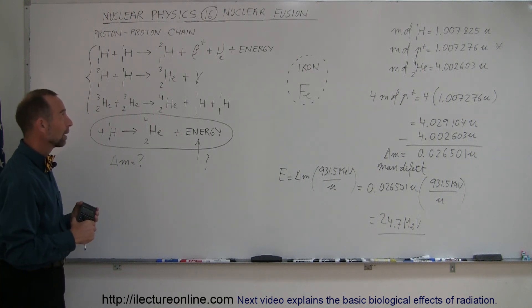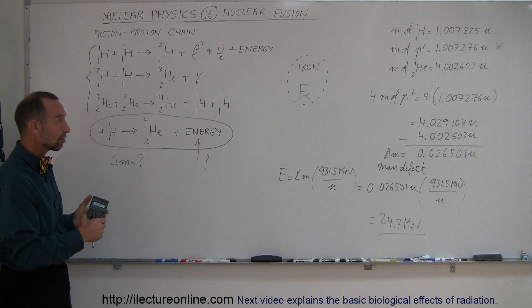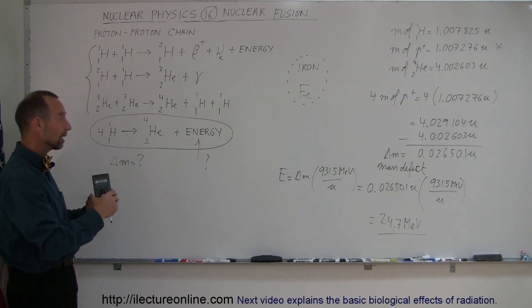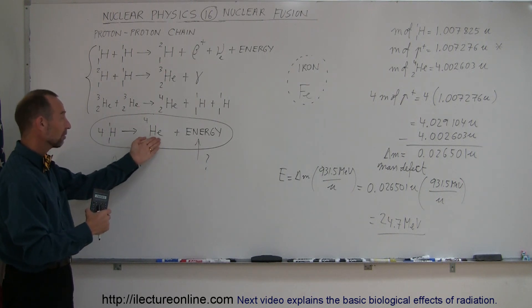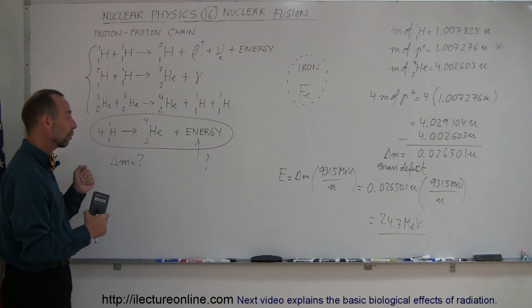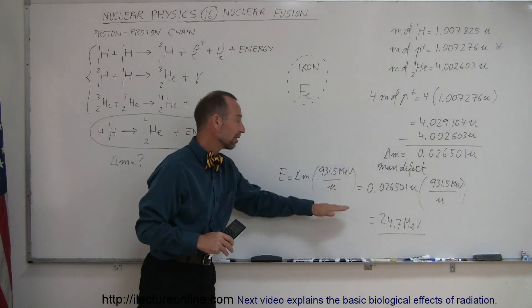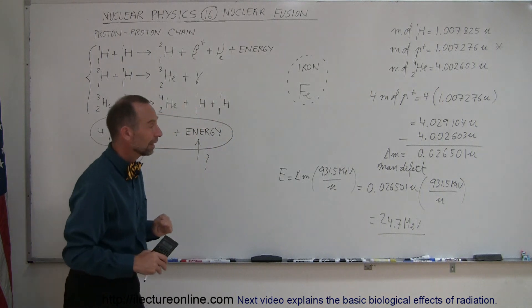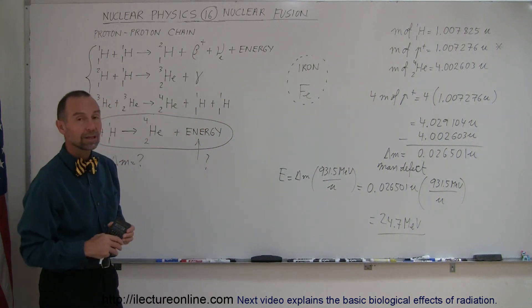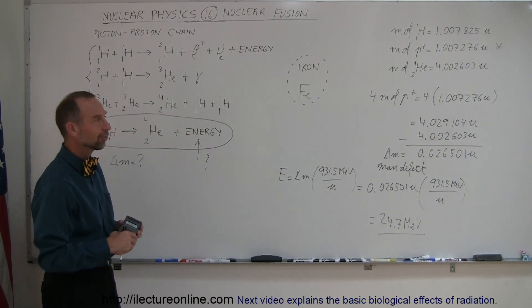A nuclear fusion reaction is simply where you slam smaller atoms together, you make bigger ones, the mass of the bigger ones is less than the mass of the smaller ones. You take the difference in the mass, call it the mass defect, multiply times the conversion, and you can calculate the energy released in such a reaction.